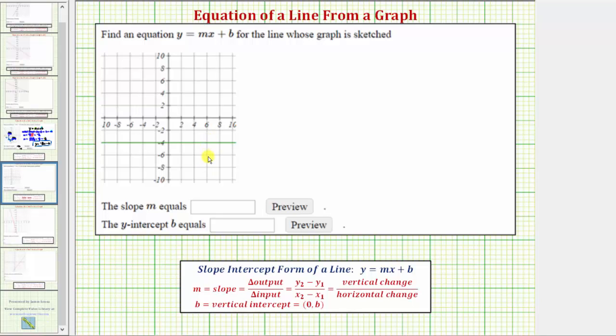Here we're given the graph of a line and asked to determine the equation in slope-intercept form, which is the form y equals mx plus b. In this form, m is the slope of the line and b is the vertical or y-intercept.